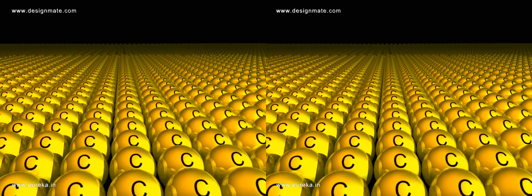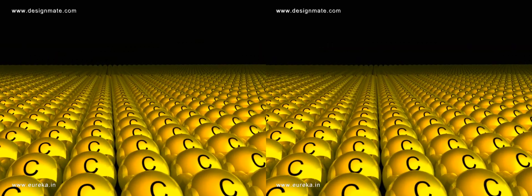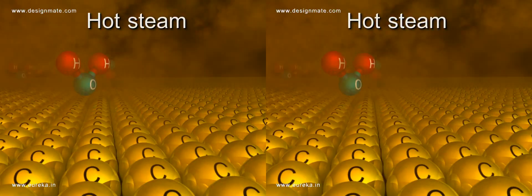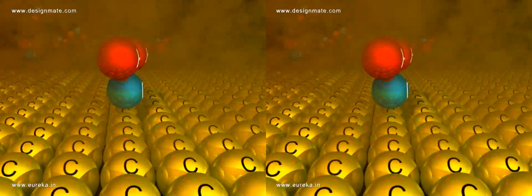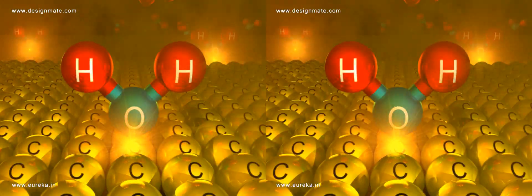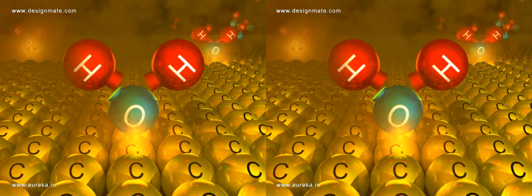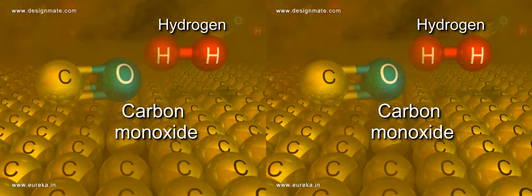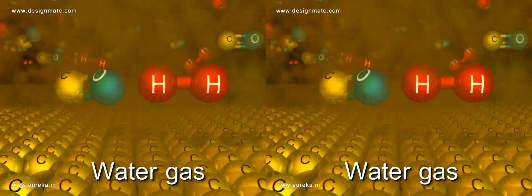Coke contains about 60% of carbon. When hot steam is passed over coke, carbon in the form of coke reacts with water vapors to form a mixture of carbon monoxide and hydrogen, which is called water gas.